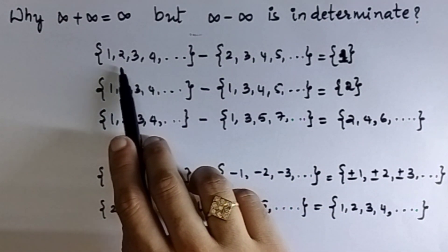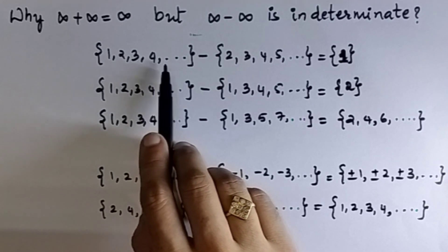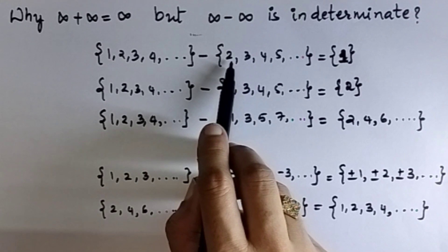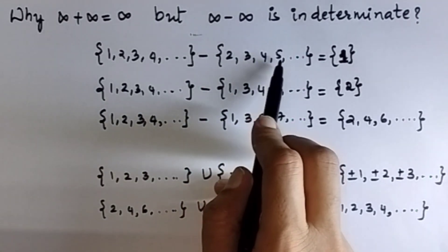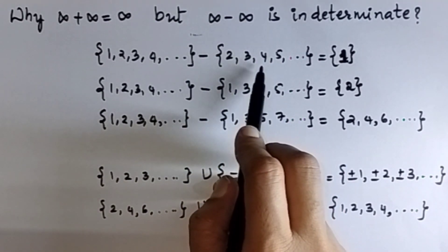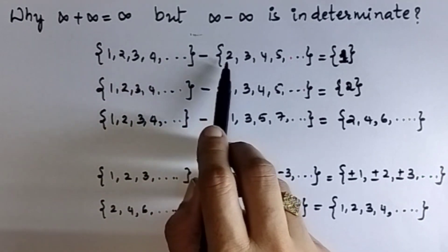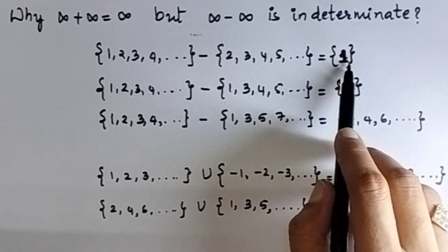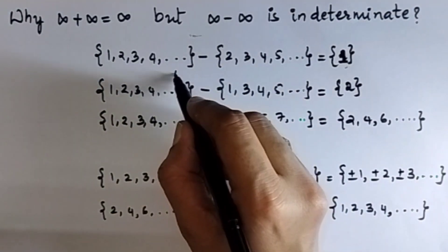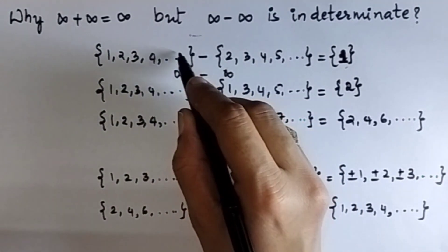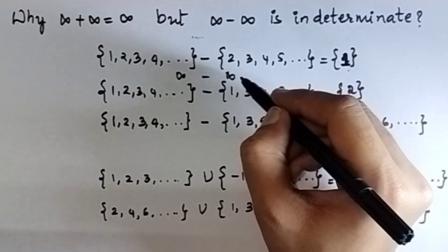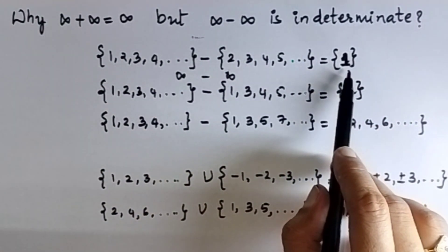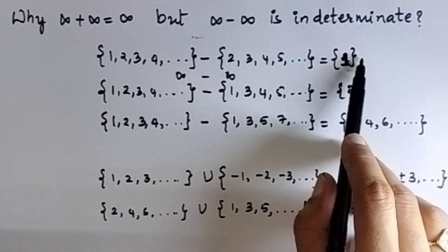I have considered the set of all natural numbers, which is infinite. From this set, I will subtract the set containing 2, 3, 4, 5, and so on. This set is also infinite. The difference between these two sets is equal to the set containing 1. That is infinity minus infinity — here it gives the set containing 1 in this example.